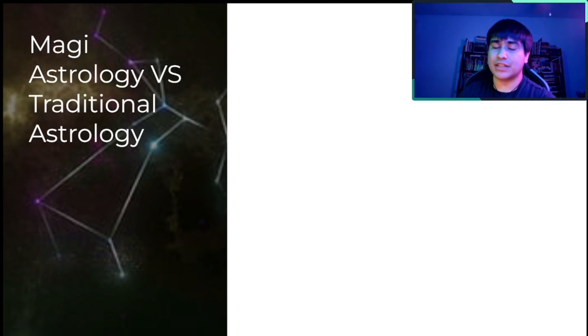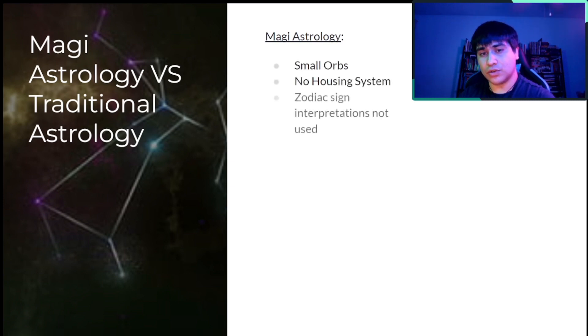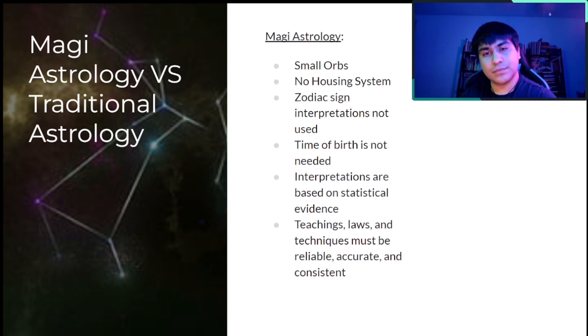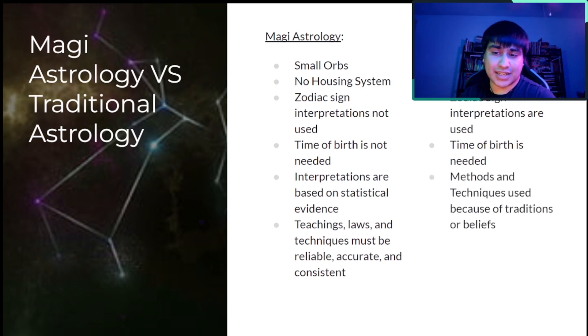Here are some of the few differences between Magi Astrology and traditional astrology. Magi Astrology uses small orbs. There is no housing systems whatsoever. Zodiac sign interpretations are usually not used at all. Time of birth is not really needed. Interpretations are based upon statistical evidence, and teachings, laws, and techniques must be reliable, accurate, and consistent to what is shown from the statistical standards. Traditional astrology usually would have large orbs, housing systems are definitely implemented, zodiac sign interpretations are always present, time of birth is needed, and methods and techniques usually are used and passed down because of tradition or beliefs or even some type of philosophical idea or philosophy.